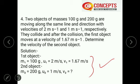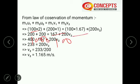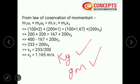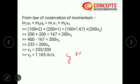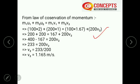We have all the data: M1 = 100 g, U1 = 2 m/s, V1 = 1.67 m/s, M2 = 200 g, U2 = 1 m/s. Here we do not need to convert grams to kg because both masses are in grams — the factor of 1/1000 appears on both sides and cancels out. If one mass is in kg and the other in grams (like question 1), then you must convert. Here you can use grams directly.